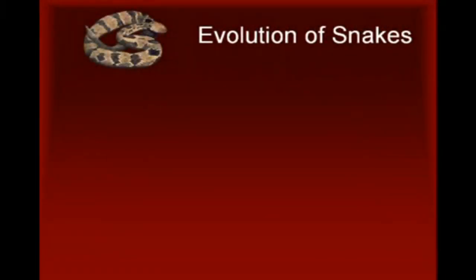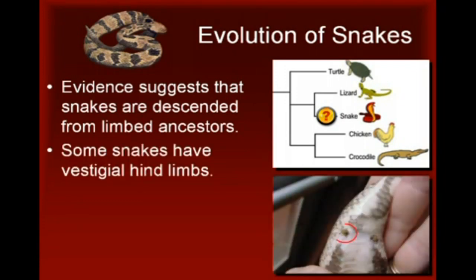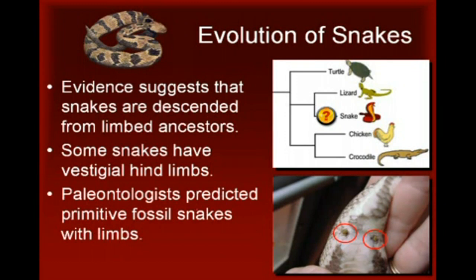Our third example involves the evolution of snakes. Evidence from the morphology and development of existing snakes suggests that they evolved from a limbed ancestor. Molecular evidence also supports this hypothesis, showing that, among living animal groups, snakes are most closely related to lizards. In fact, the most primitive existing snakes, pythons and boa constrictors, have tiny nub-like legs beneath their skin and minuscule half-inch claws that protrude out from their bodies. Based on this evidence, paleontologists used evolutionary theory to predict the existence of primitive snake fossils with evidence of limbs.